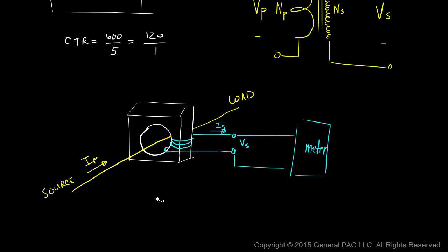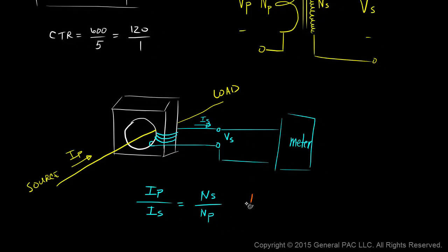In this particular example, primary current over secondary current equals the number of secondary turns over the number of primary turns, which means secondary current equals primary current times the number of primary turns divided by the number of secondary turns.